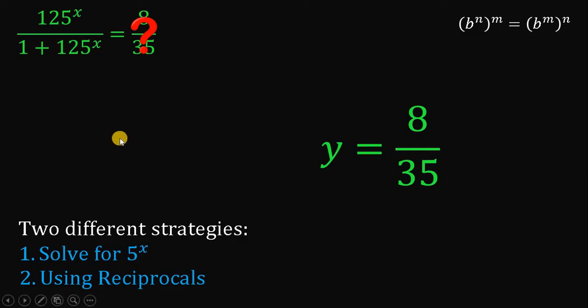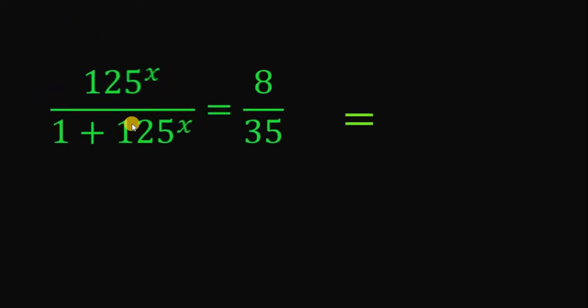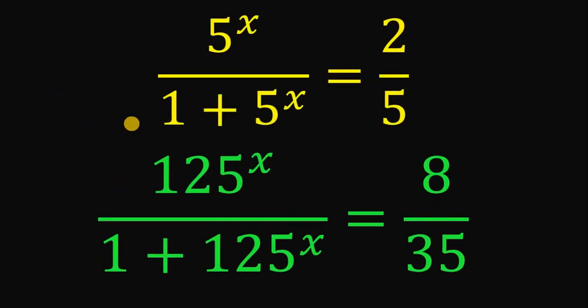Therefore, using two different strategies, we get that the value of 125 raised to x over 1 plus 125 raised to x must be equal to 8 over 35. And as always, we are done.